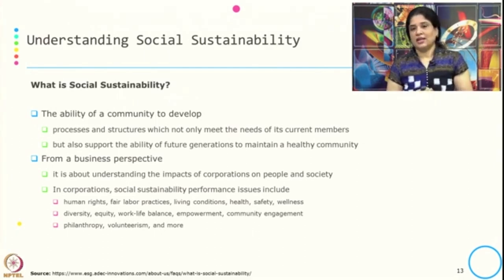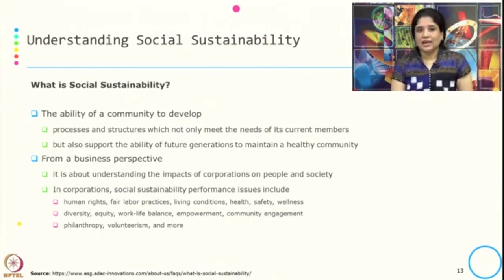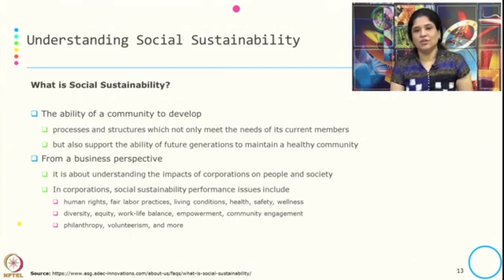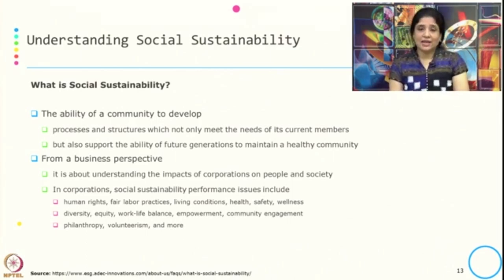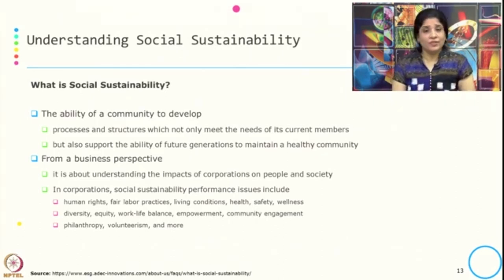Sustainability has three dimensions: economic, environment, and social. Social sustainability is the ability of a community to develop processes and structures which not only meet the needs of its current members, but also support the ability of future generations to maintain a healthy community. From the business perspective, it is about understanding the impact of corporations on people and society. Corporate social sustainability performance issues include human rights, fair labor practices, community engagement, and philanthropy.